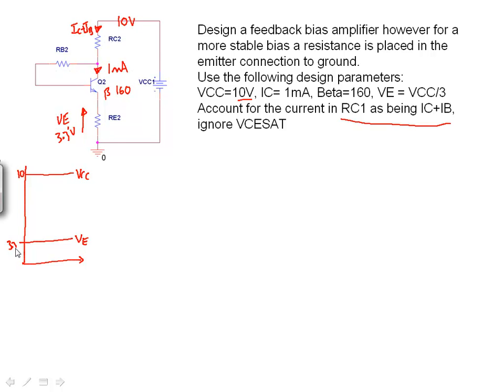And down the bottom here we now have VE, we have an emitter voltage 3.3 volts. That's good. We want maximum symmetrical swing. We're designing for something like that but we're ignoring VCE saturation so we don't have to worry about that. So this collector voltage here VC, the absolute voltage